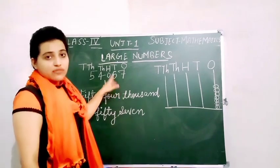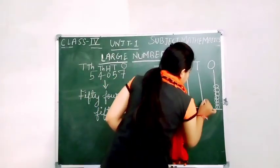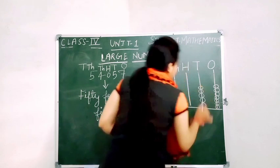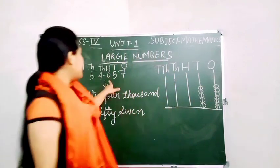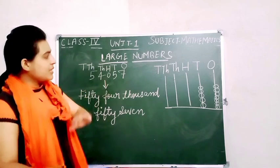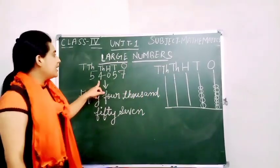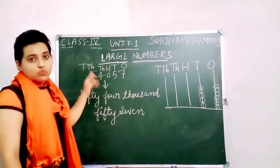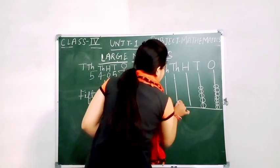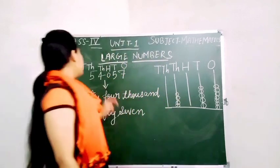And in the 10's place we have 5, so 5 beads: 1, 2, 3, 4, 5. And in the 100's place there is no number, so we will not draw any beads. Now in the 1000's place we have 4 beads: 1, 2, 3, 4.